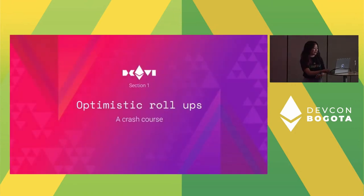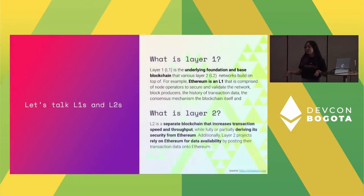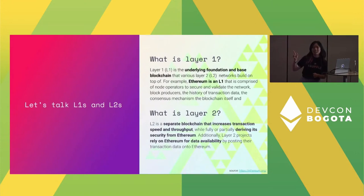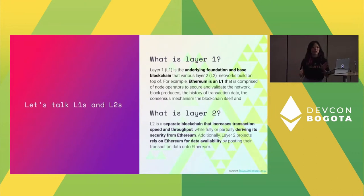So let's start off — optimistic roll-ups, here's a crash course. What's a layer one? What's a layer two? Layer one: Ethereum, Bitcoin — that base layer. Layer two: a separate blockchain focused specifically on increasing transaction speed and scalability, utilizing Ethereum for data availability — specifically posting transaction data and getting it from Ethereum. Layer twos are specifically defined by deriving their security from Ethereum. Something like a sidechain doesn't do that, so sidechains are not qualified as a layer two.